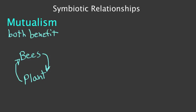The second type of symbiotic relationship I want to talk about is called commensalism. In commensalism, one organism benefits, but the other one is unaffected.